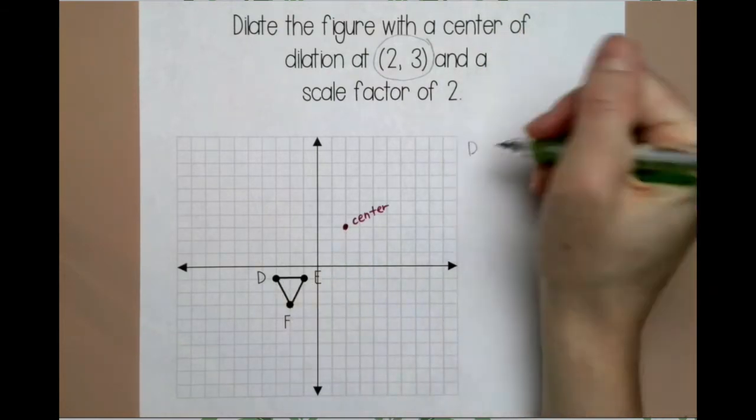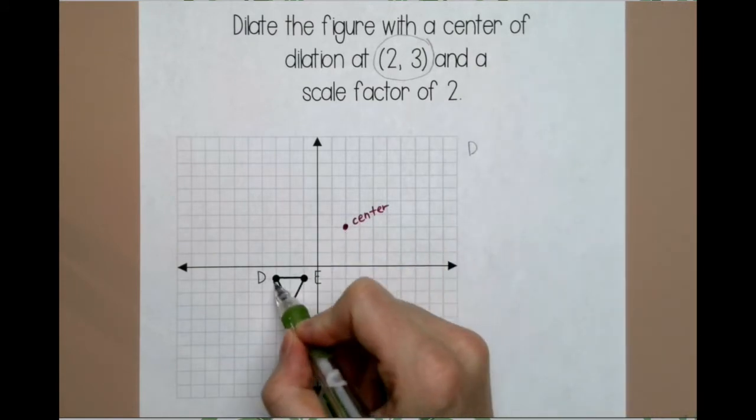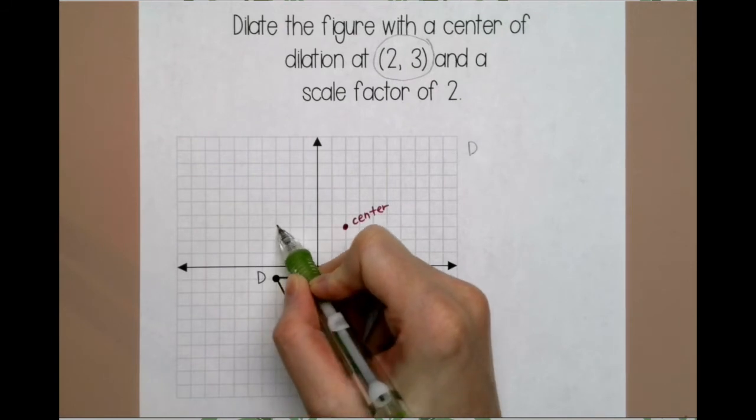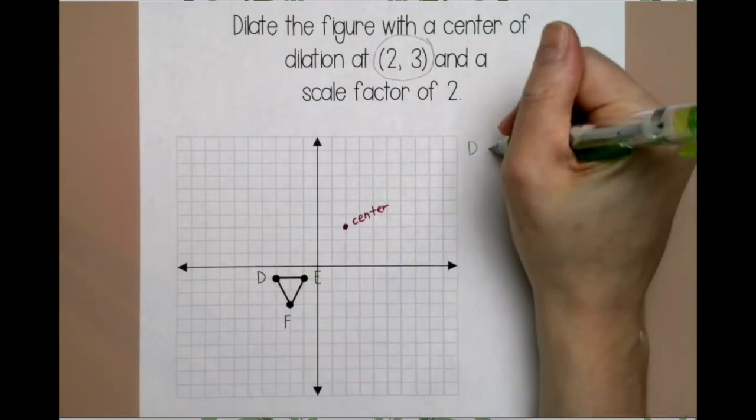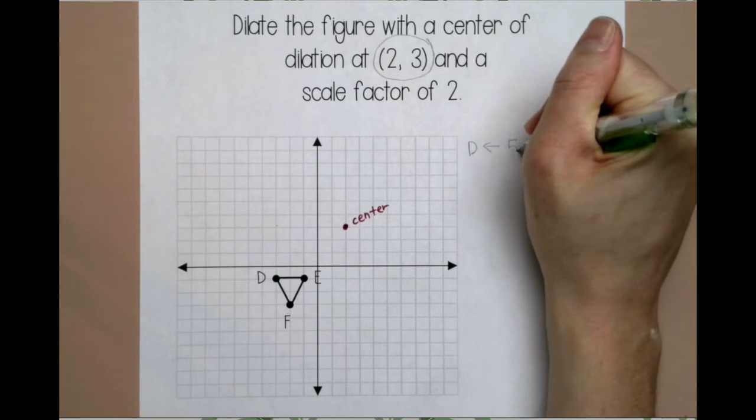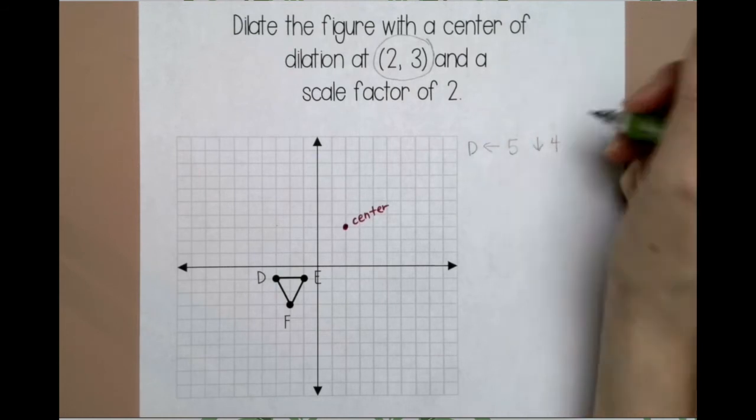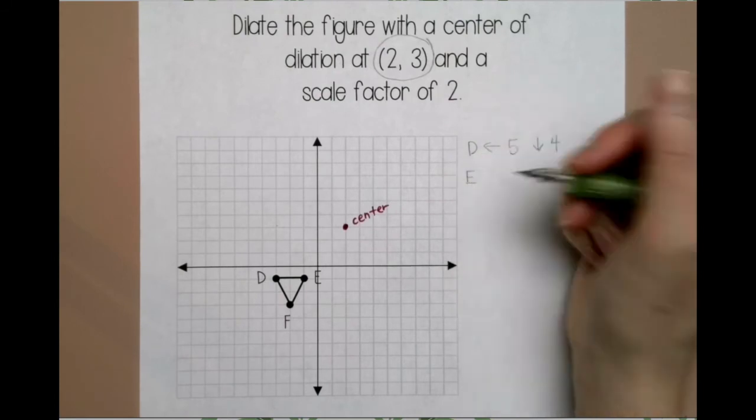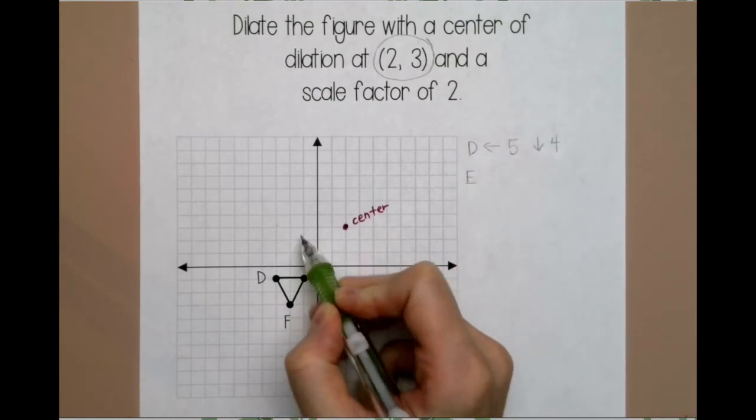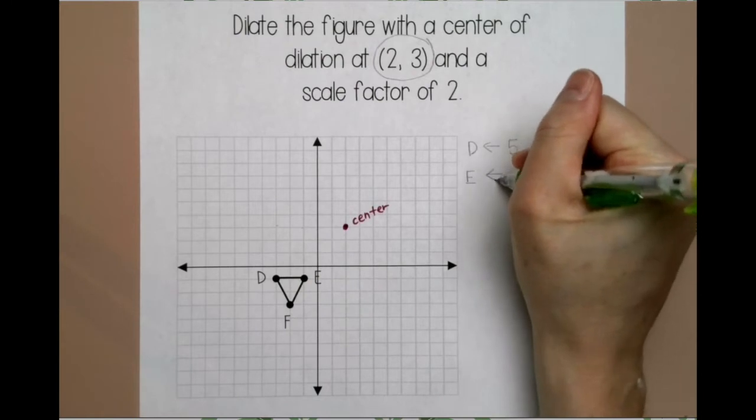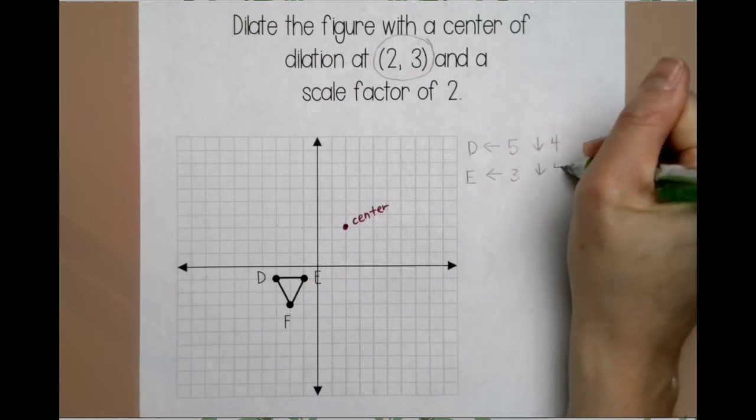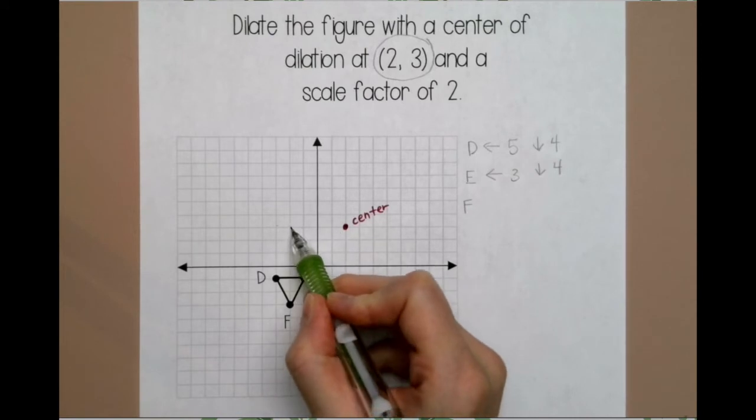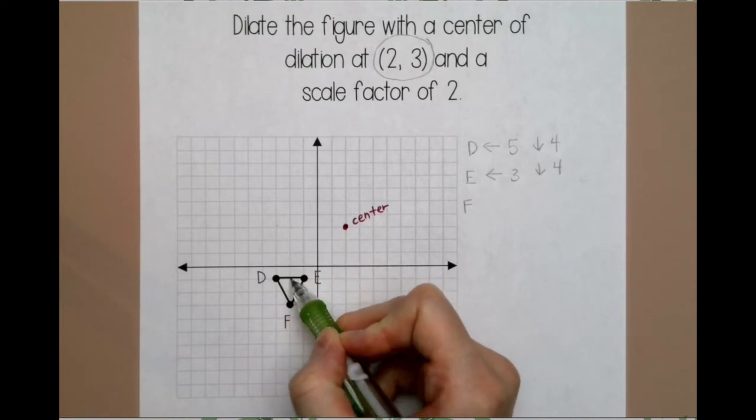I'm going to start with D, and I'm going to count from my center to D. So I'm going to go left 1, 2, 3, 4, 5, and down 1, 2, 3, 4. And notice I used arrows so I can remember which direction that I went. For E, same thing. I'm going to go left 3, down 4. For F, I'm going to go left 4, down 1, 2, 3, 4, 5, 6.